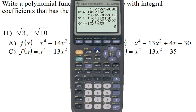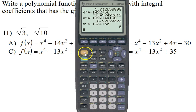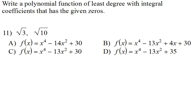x to the fourth minus 13x squared plus 30. I get zero, that could be the answer. I want to check the last one though, just to be on the safe side. It's very similar, it's just plus 35 instead of plus 30. So I'm just going to change that 30 to 35. I don't get zero. So it has to be C, and it is C.